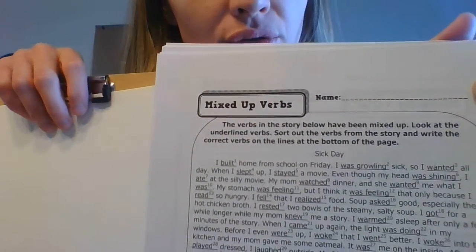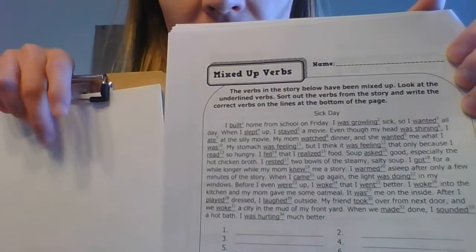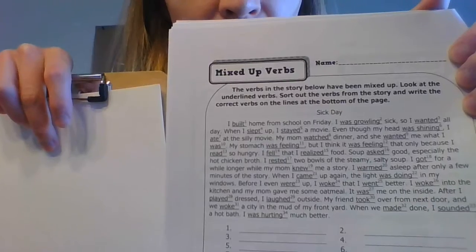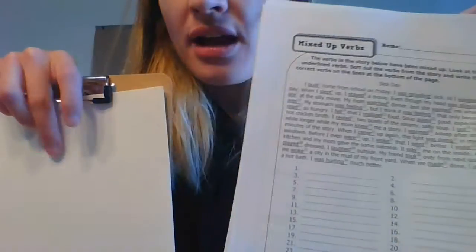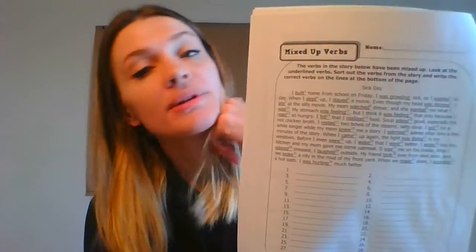So for example, 'I was growling' — I'd write 'was growling.' 'I wanted' — I'd write 'wanted.' Write down all the underlined verbs first on a separate piece of paper. Then go through and read the story again, look at your list of verbs, and pick the verb that fits best.